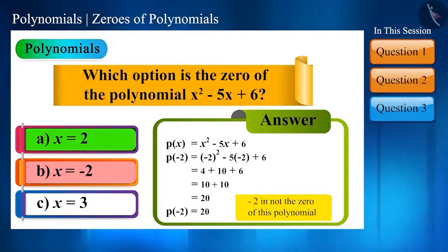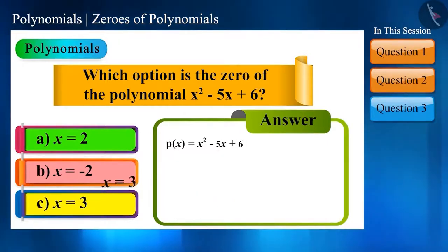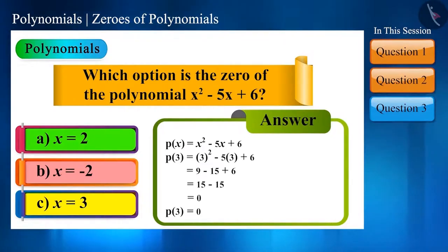And in the last, with x is equal to 3, the value of polynomial is 0. It means 3 is the zero of this polynomial.